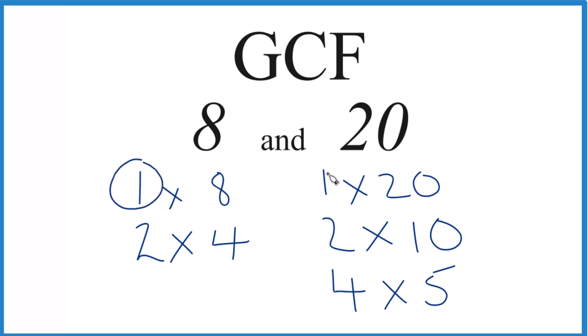1, that's in common between 8 and 20. 2, that goes into 8 and 20 evenly. But 4, that's the greatest number that goes into both 8 and 20. That's the GCF. So in answer to our question, the GCF for 8 and 20, that's 4.